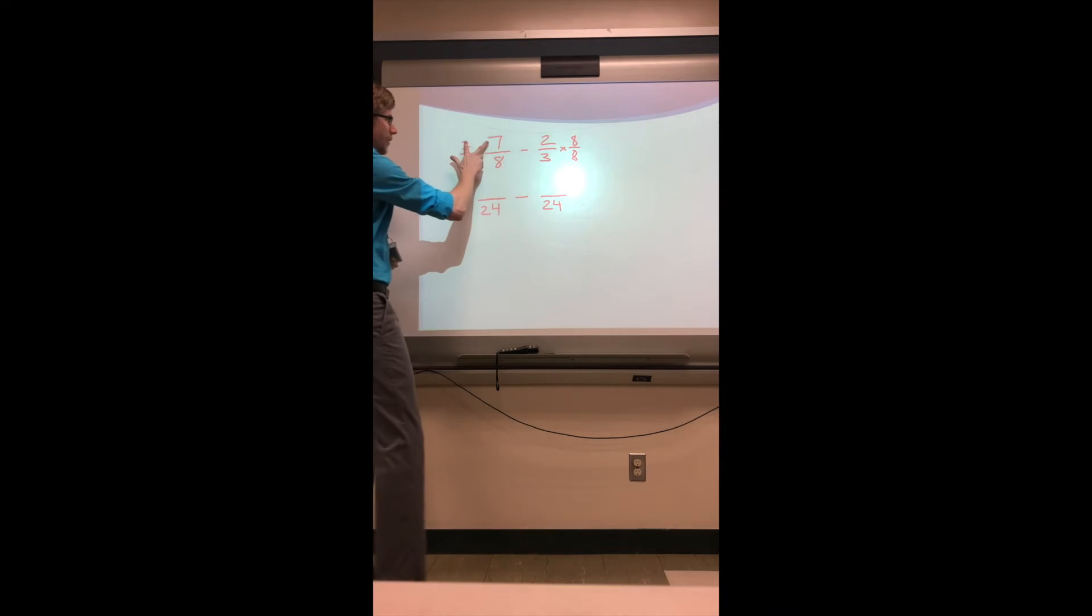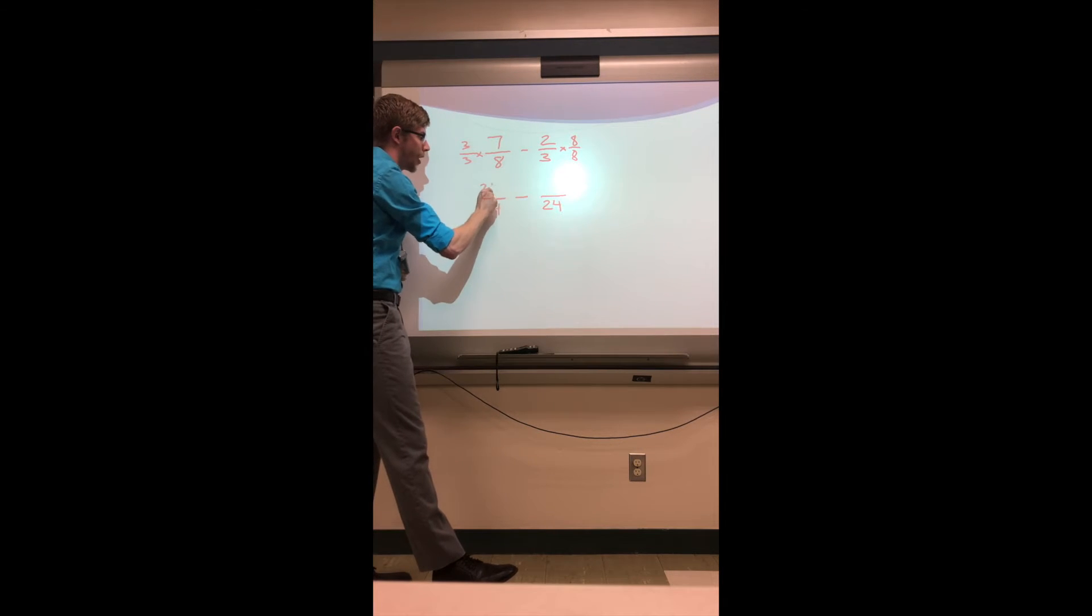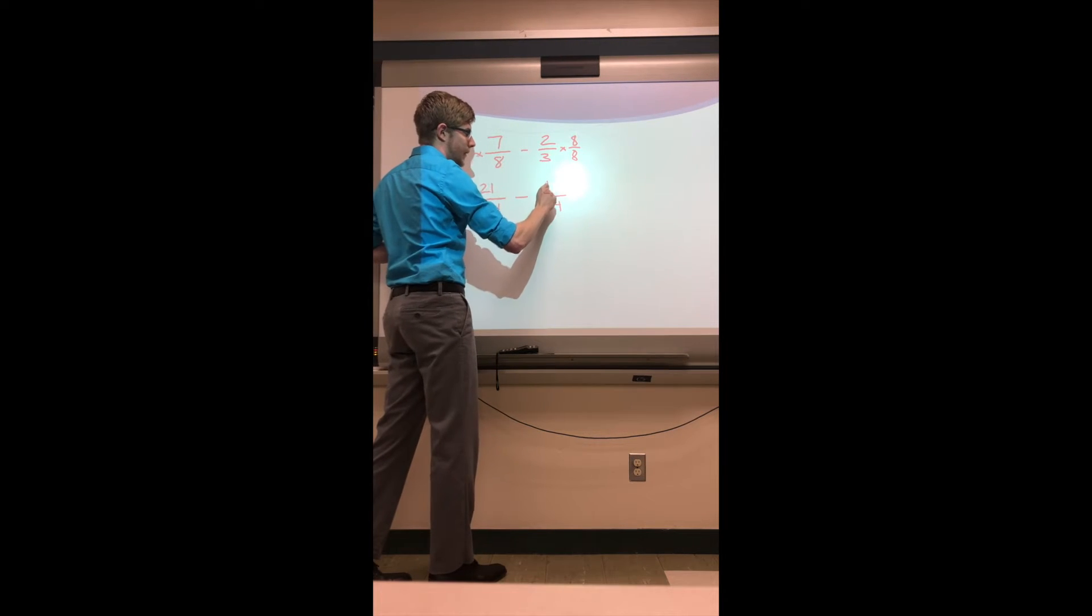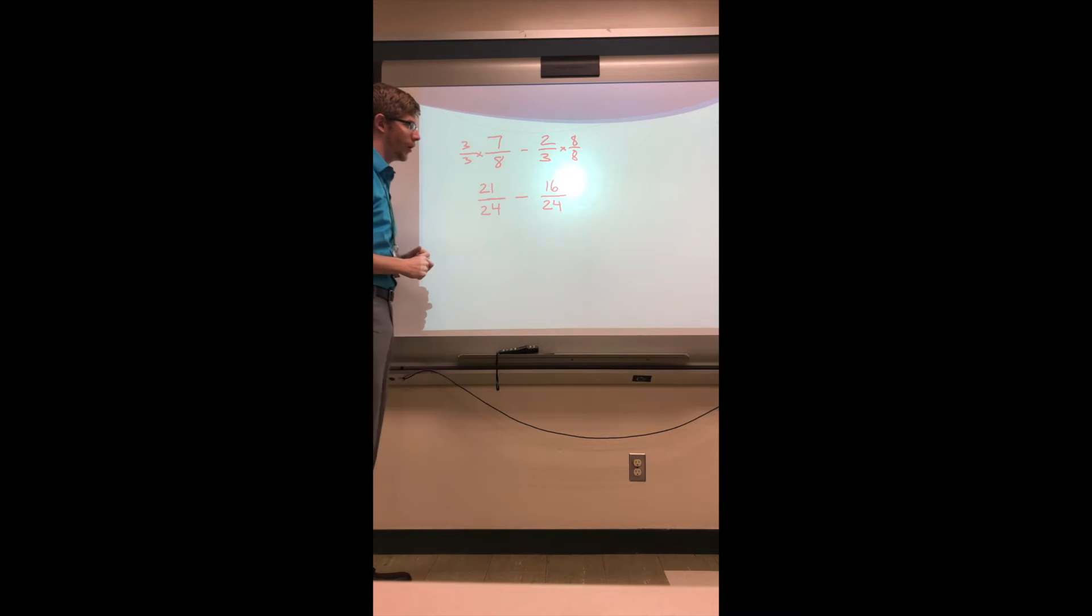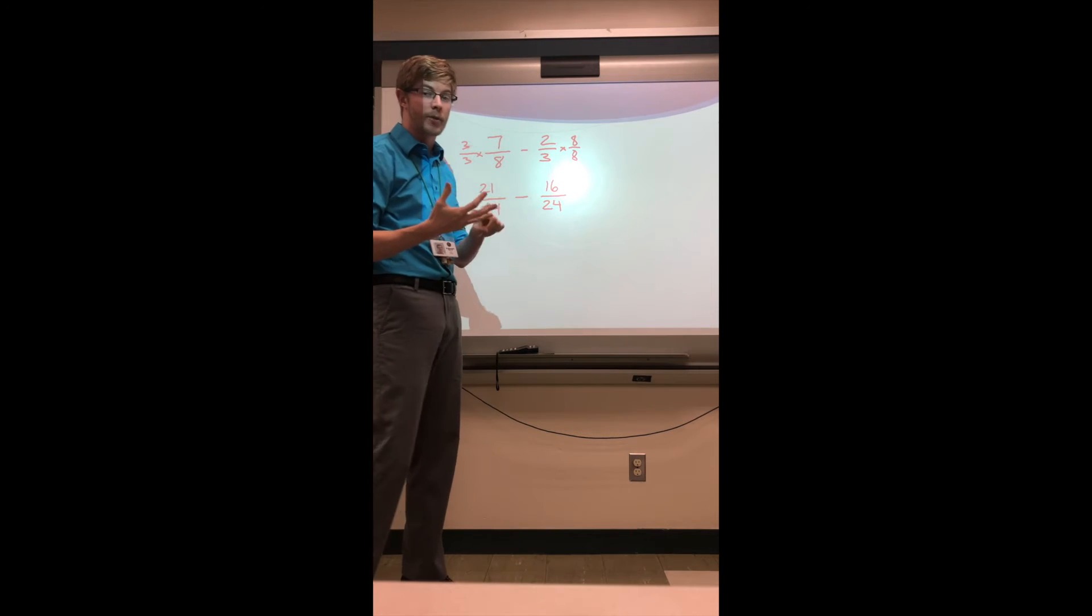So again, I'm just showing what I need to multiply here because that's also then going to give me my numerator, because I need to multiply by the same number. Three times seven is 21, two times eight is 16. So step one, we found that common denominator.